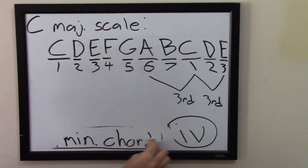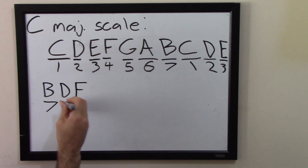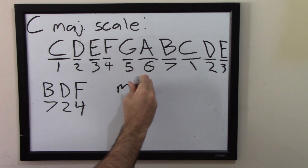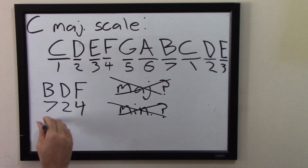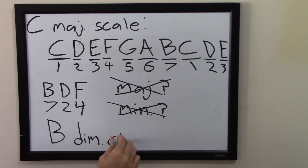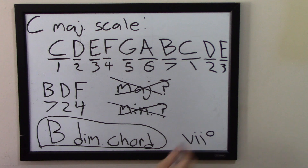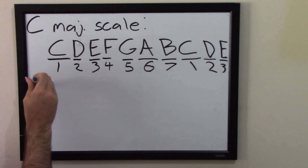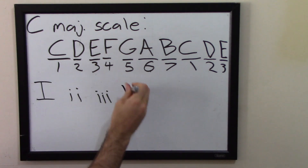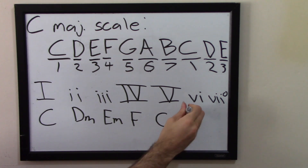Finally, you can start on the 7th degree of the scale, which is essentially the last degree before it starts over. If you take a triad from that, you get the 7th, the 2nd, and the 4th. In the key of C, that's B, D, and F. What kind of triad is B, D, and F? It's actually neither major nor minor — it is a diminished triad. That's the only one that's not major or minor. You can represent this with a lowercase 7, and you typically want to include something to indicate it's diminished, like a little degree sign.